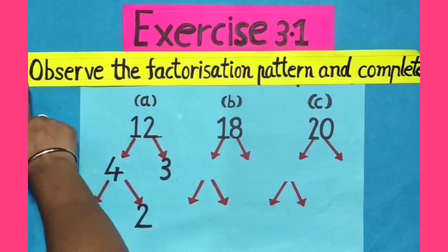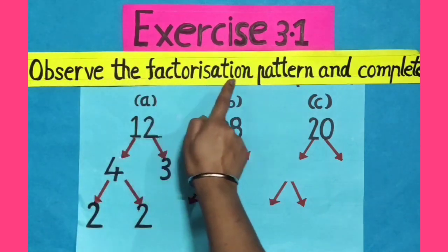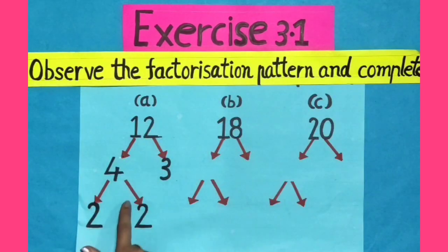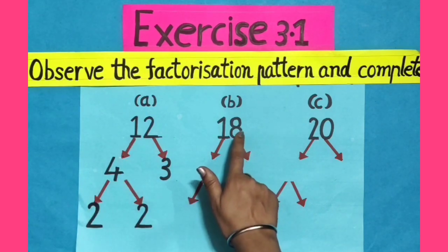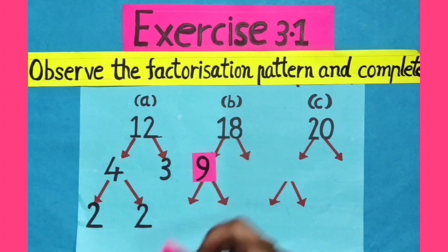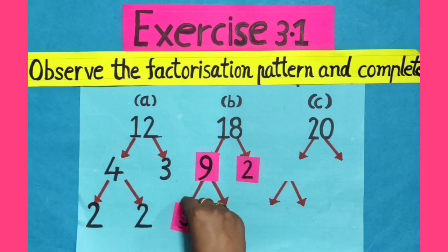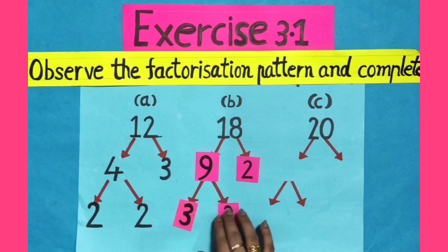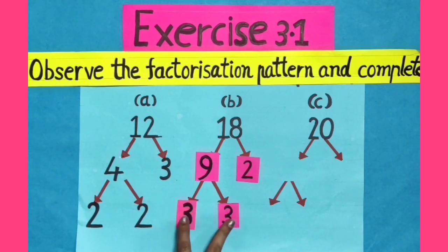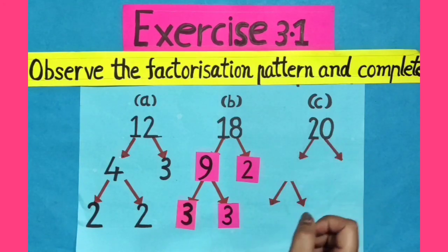Dear kids, now we will do question number 8 of exercise 3.1. The question is: observe the factorization pattern and complete. The first part is already done; we have to follow the same pattern. Here we will write the factors of 18, 9 and 2. The factors of 9 are 3 and 3 — meaning these two factors should be the same digits. Now, do part number C yourself at your places.